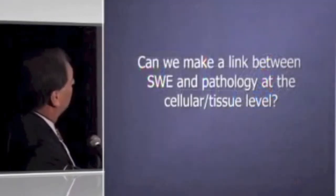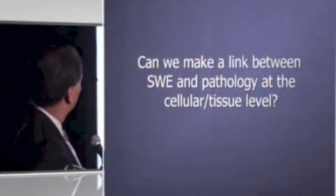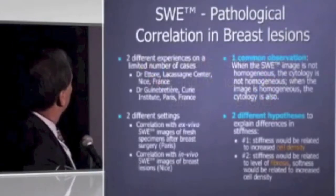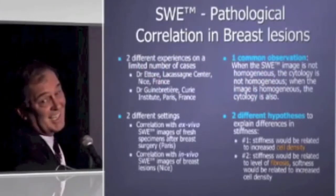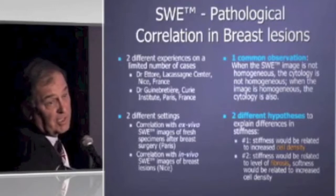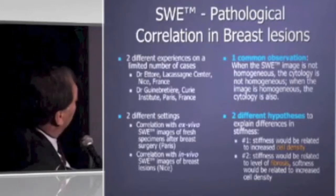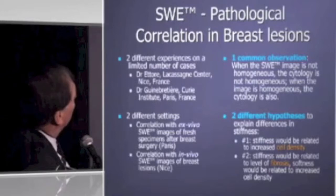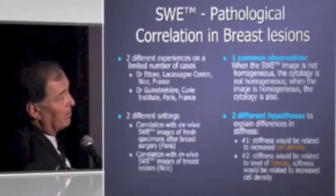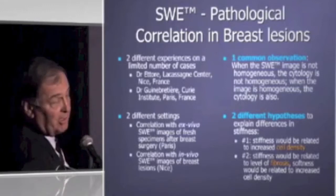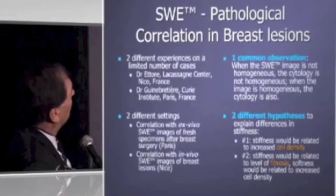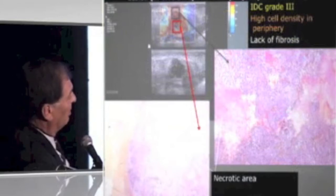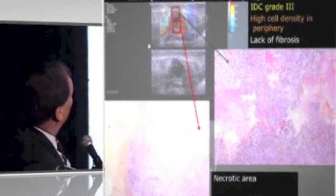We can also do thick-section, large-section pathology, which is being done in France at two sites — in Nice and at the Curie Institute. It's easier there because they can get fresh serial section whole-mount pathology, which is very difficult to get from pathologists in the U.S. What we're finding is that where the shear wave is heterogeneous, the pathology is heterogeneous, and there's good correlation between fibroelastosis — which is desmoplasia — and/or cell density, depending on whether you're dealing with a stellate lesion or a circumscribed cellular lesion.